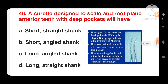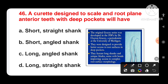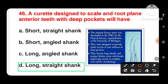Next question: a curette designed to scale and root plane anterior teeth with deep pockets will have — options are short straight shank, short angled shank, long angled shank, or long straight shank. The correct answer is long straight shank. The original Gracey series, developed in the 1930s by Dr. Clayton Gracey, was designed to access the root surface in deep pockets. Its features include a long shank and a unique blade. So the correct answer is long straight shank.